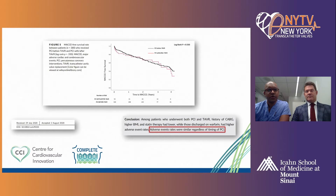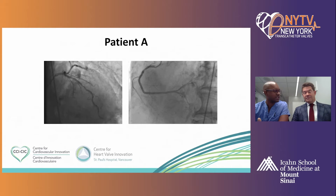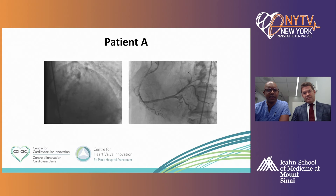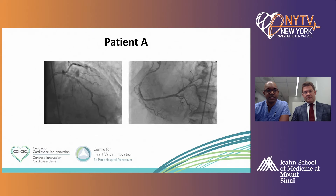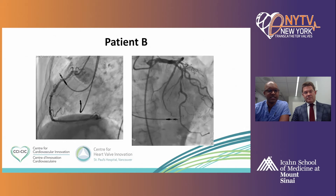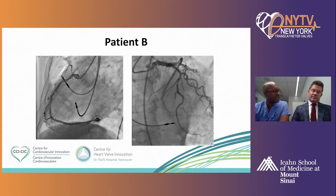To highlight this heterogeneity: these are two examples from our heart team rounds just last week. Two patients, both relatively young in their 70s. Patient A has two-vessel concomitant coronary artery disease being considered for TAVR. Patient B is a very similar situation with disease in the LAD and in the RCA. Even within our local context, there was significant debate as to what the appropriate approach should be in these patients.